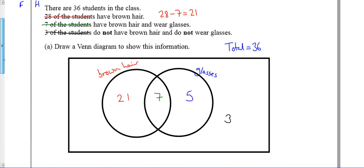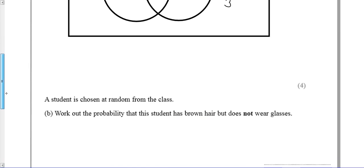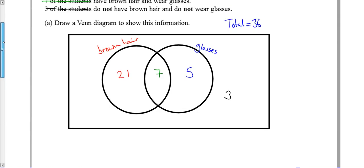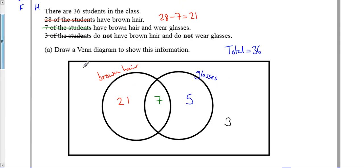There is a second part to the question. It says, student has chosen at random, work out the probability that the student has brown hair but does not wear glasses. Well, if they have brown hair, I've got this red bit here, this 21 and 7, there's 28 that have got brown hair. But we don't want to count the seven, because we don't want to count the people who've got glasses.